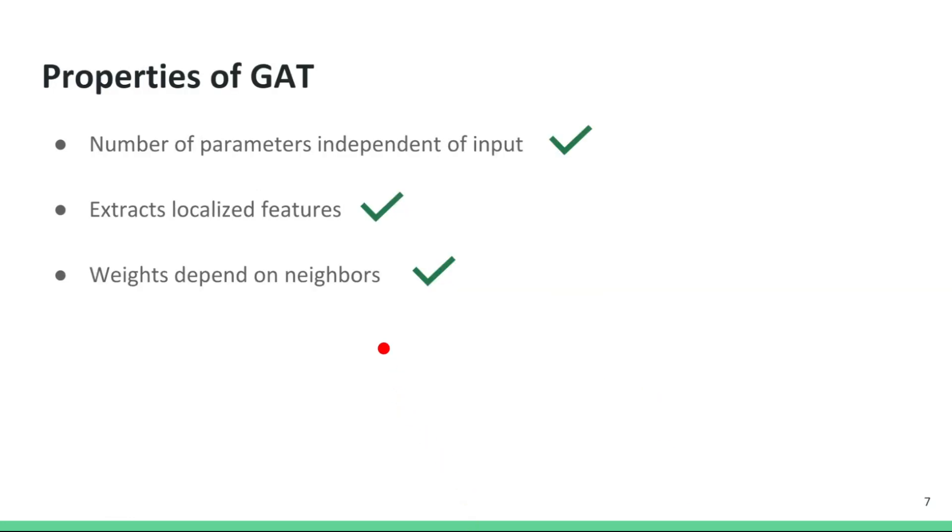So coming back to the first slide of this video, we can see that the graph attention operator or GAT operator has all the positive traits of convolutional filters used in CNNs. Just like the simple graph convolutional operator, the number of parameters in a GAT operator is independent of the size of the graph and it operates locally and hence extracts localized features from a node's neighborhood. Finally, and in an improvement to a simple graph convolutional operator, it is able to assign arbitrary weights to neighboring nodes.